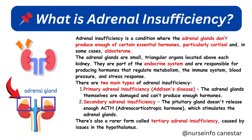There are two main types of adrenal insufficiency. First, Primary Adrenal Insufficiency — Addison's disease — where the adrenal glands themselves are damaged and can't produce enough hormones. Second, Secondary Adrenal Insufficiency, where the pituitary gland doesn't release enough ACTH (adrenocorticotropic hormone), which stimulates the adrenal glands. There's also a rarer form called tertiary adrenal insufficiency, caused by issues in the hypothalamus.